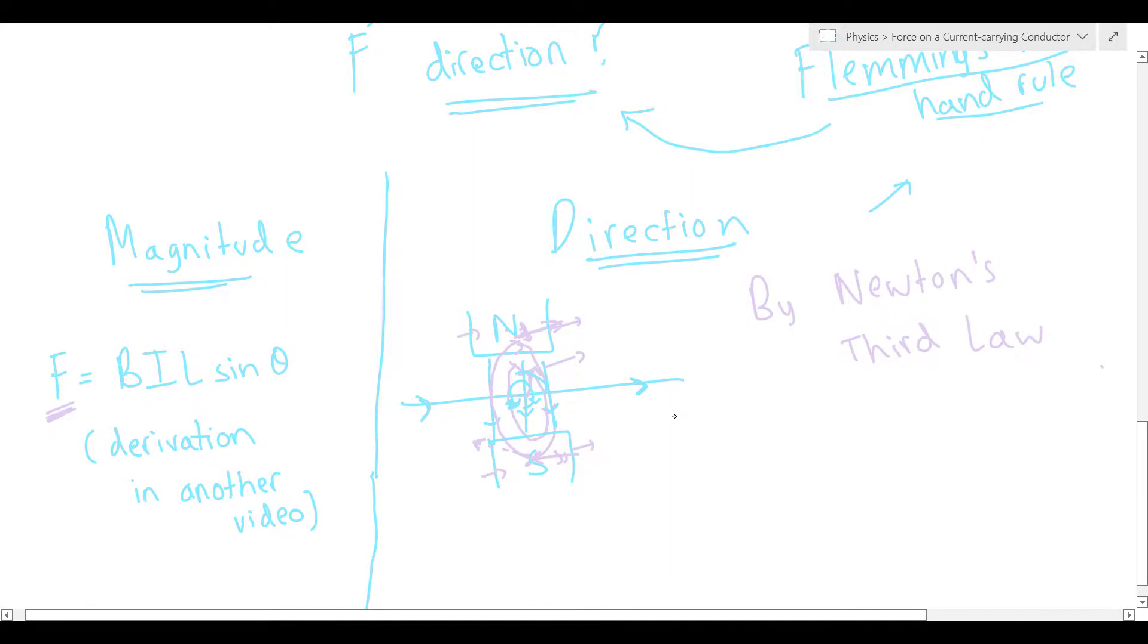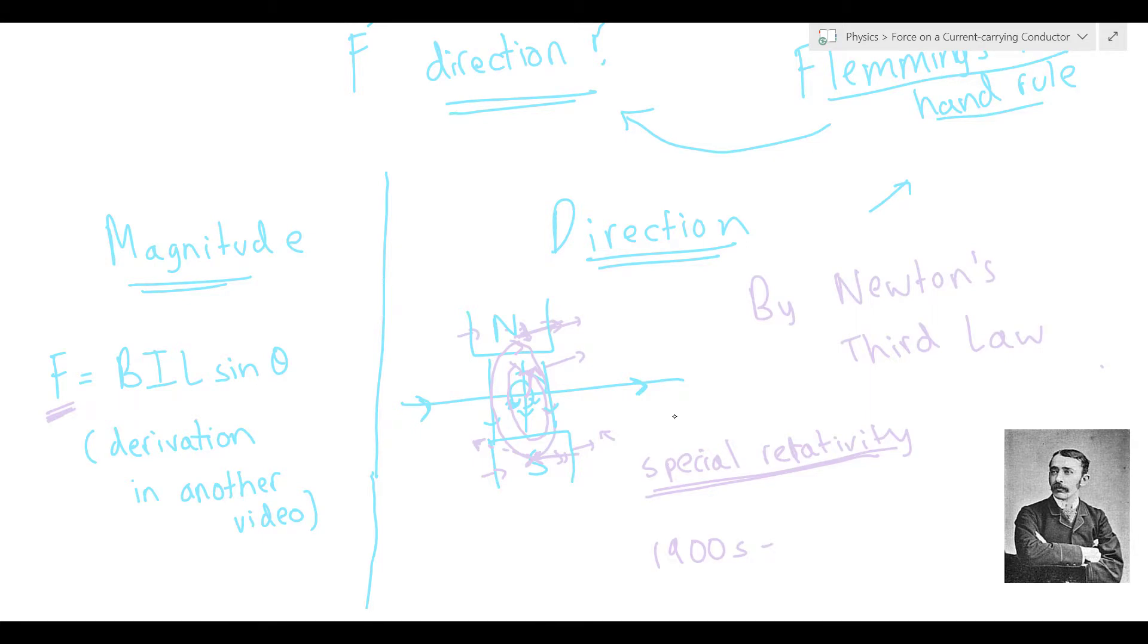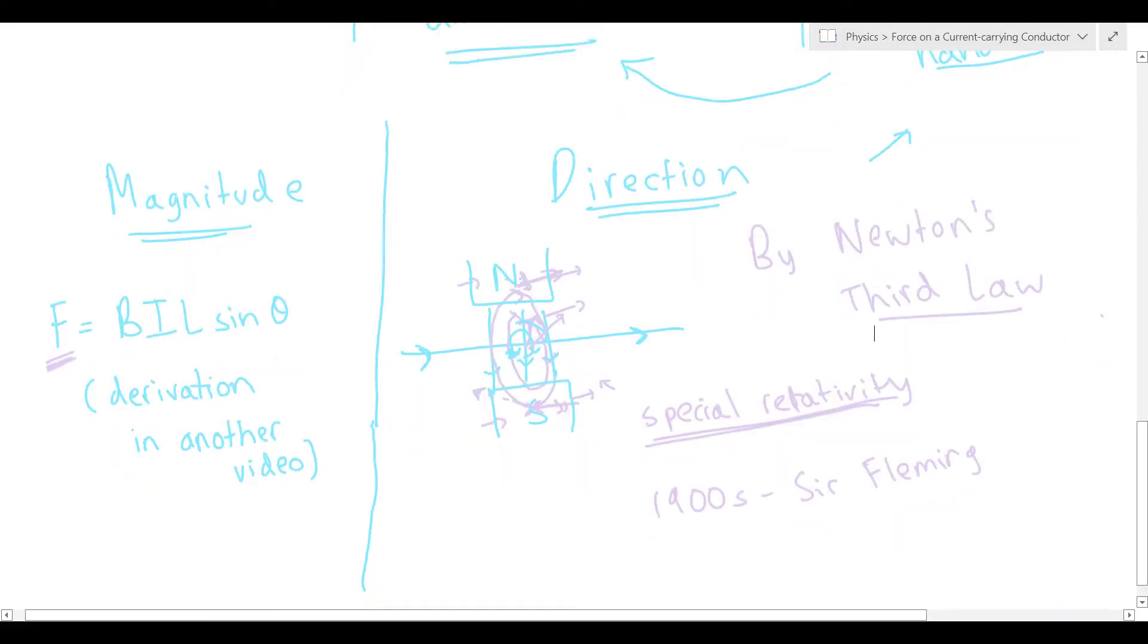Now, the reason why the electric and magnetic field actually behave in this way is really, really interesting and actually comes from Einstein's theory of special relativity. Veritasium and Minute Physics made a really interesting video about this, so I'll link that in the description. I highly recommend you check it out. But anyways, so in the early 1900s, Sir John Ambrose Fleming came up with a nice little rule to remember this direction that is going to be produced of the force on the wire so that we don't have to use this Newton's third law logic every time. And it goes as such.